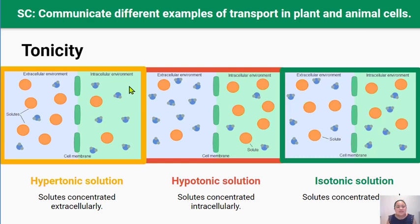There are many different substances that can be dissolved in water. These dissolved substances are called solutes, and there are different concentrations of solutes inside and outside of our cells. The concentration of these solutes on either side of the cell membrane is going to affect how water moves into or out of the cell by osmosis. The measure of solute concentration on either side of the cell membrane is called tonicity.